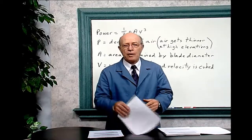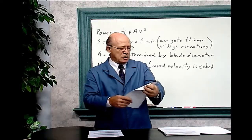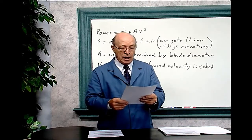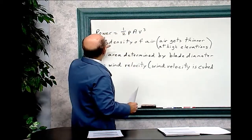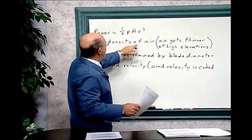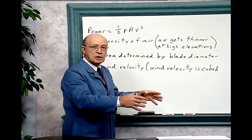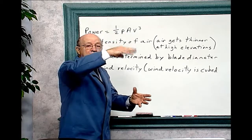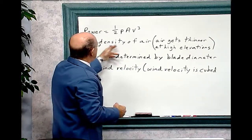This is the formula from the internet about wind power, and notice what it says: the effects of large-scale and small-scale turbulence on the power output of a small horizontal axis wind turbine. Power equals one-half times p times A times velocity cubed, where p is the density of air. If you have wind turbines at sea level versus on top of mountains, the air gets thinner at high elevation — that is why density of air is put into the formula.